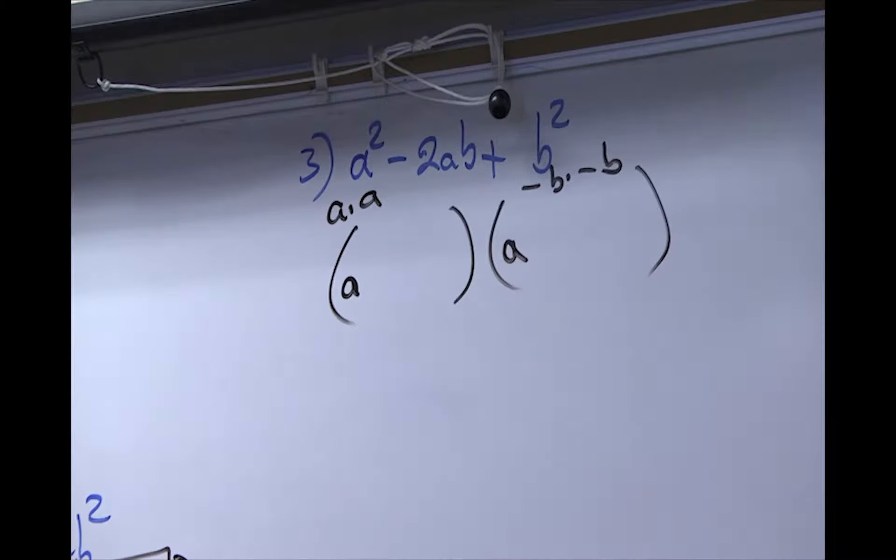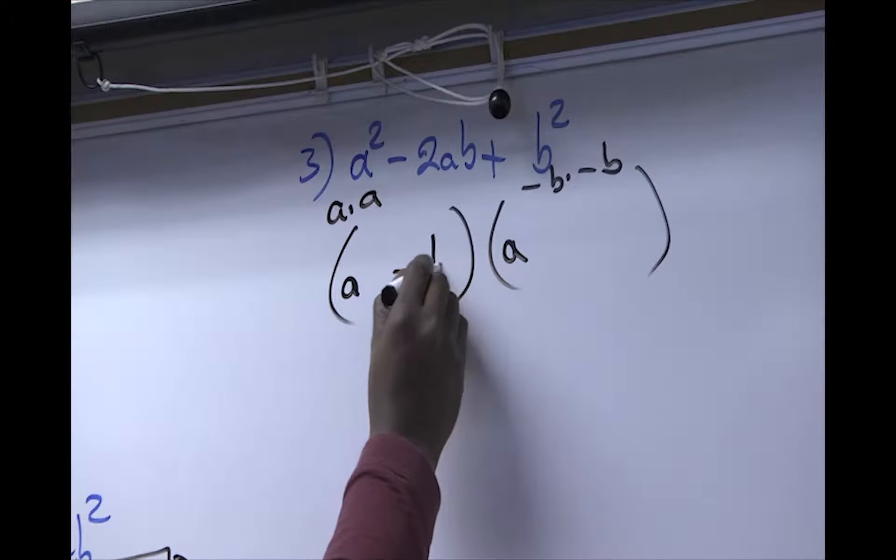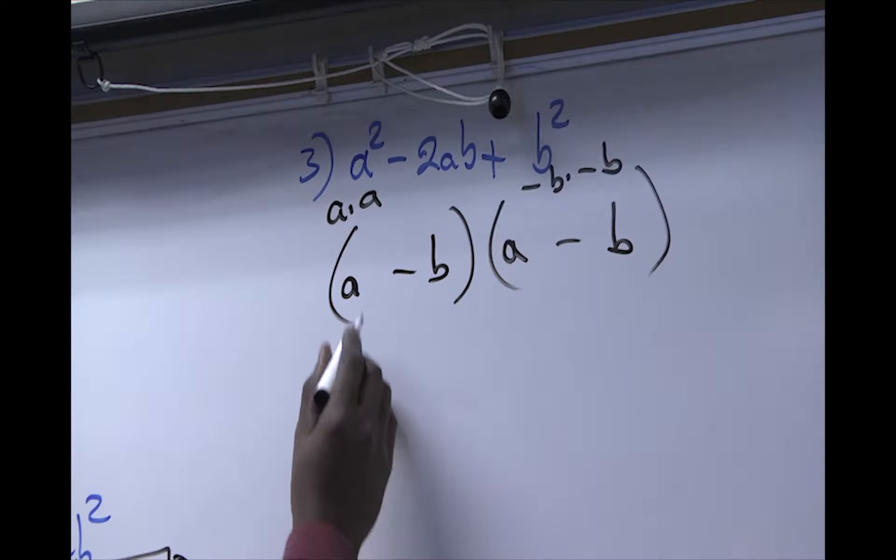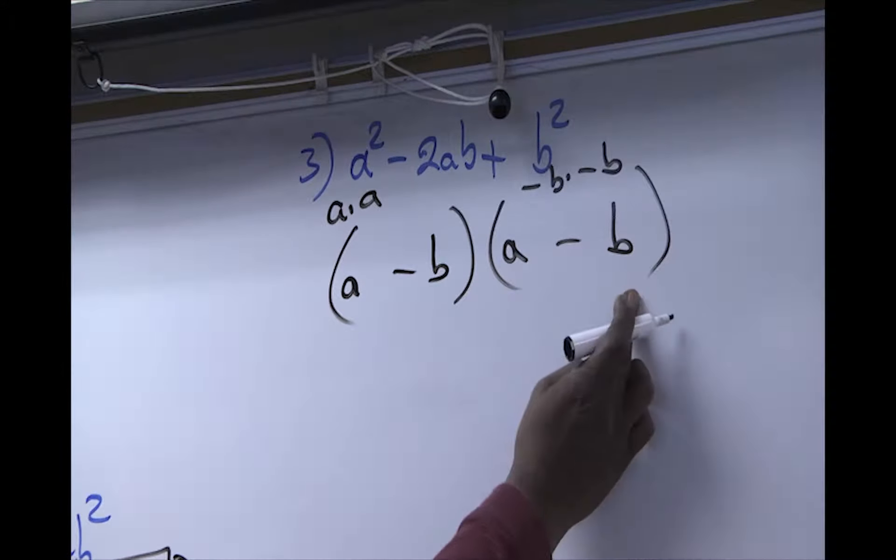So again, we separate. a being your first position and your b being in your second position. So that means that what we're going to have here is a - b times a - b.